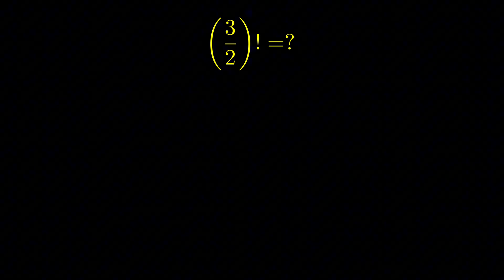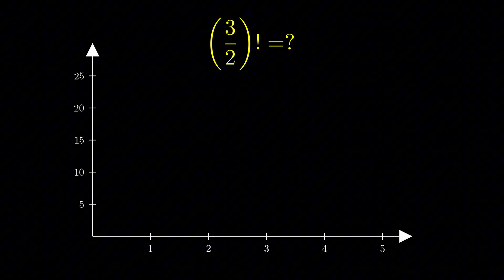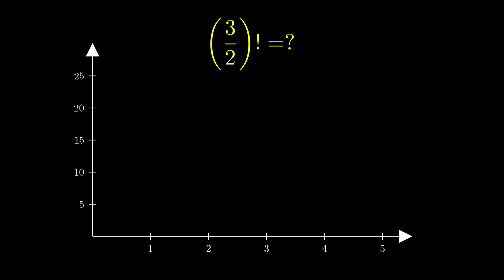The basic idea is actually pretty intuitive when you think about it. We know what factorial is for the integers. So we have these points: 1 factorial is 1, 2 factorial is 2, 3 factorial is 6, 4 factorial is 24, and so on.